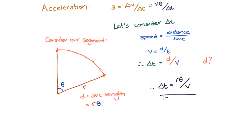We now have expressions for both delta v and delta t, so we're almost there. The acceleration is equal to the change in velocity over the change in time, and we're looking at an instantaneous moment in time. If we plug in our values, we find that our acceleration equals v theta divided by r theta divided by v.